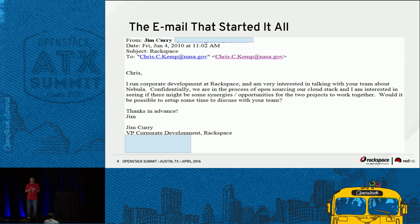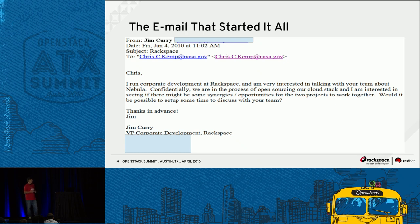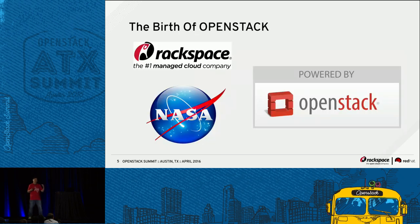This email you're looking at is the actual email sent by a Rackspace executive in 2010 to the CTO of NASA, essentially inviting them to come alongside Rackspace to create a new open source cloud platform. The history is that Rackspace up to 2010 had been running their own public cloud, but it was proprietary code with scalability challenges. When they reached the point where they couldn't scale anymore, they decided to rewrite the entire thing.